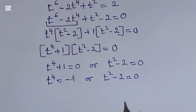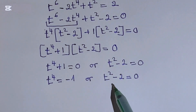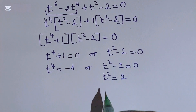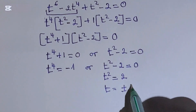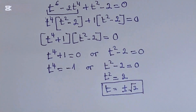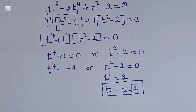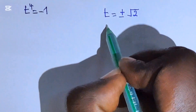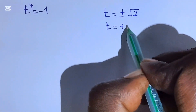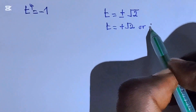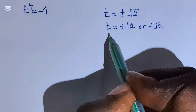Okay, so here we can start dealing with this because this is where our answer will come from — the t² minus 2 factor. So that our t will be equal to positive or negative square root of 2. So our t is equal to positive square root of 2, and our t will be equal to negative square root of 2. These are two values.